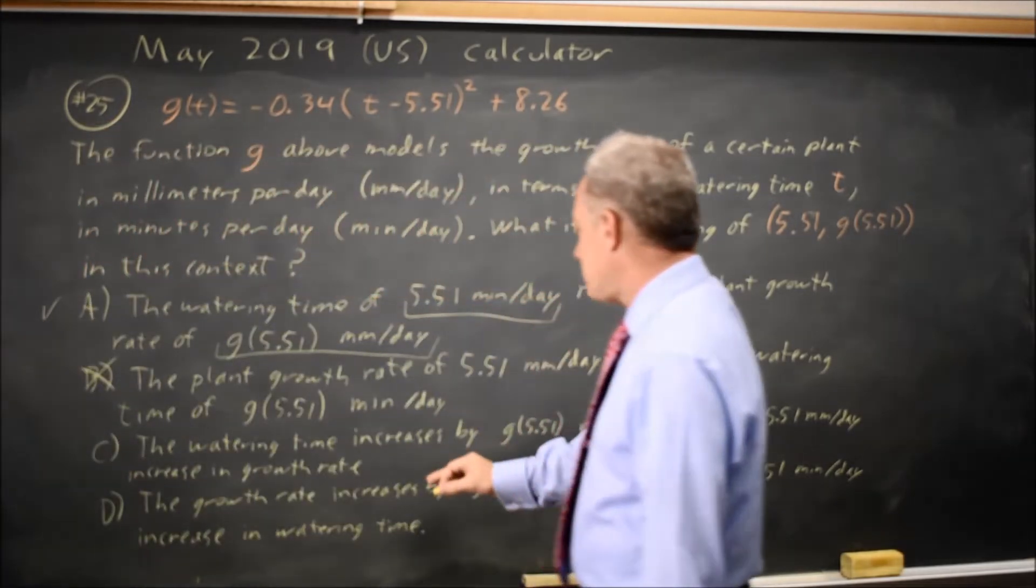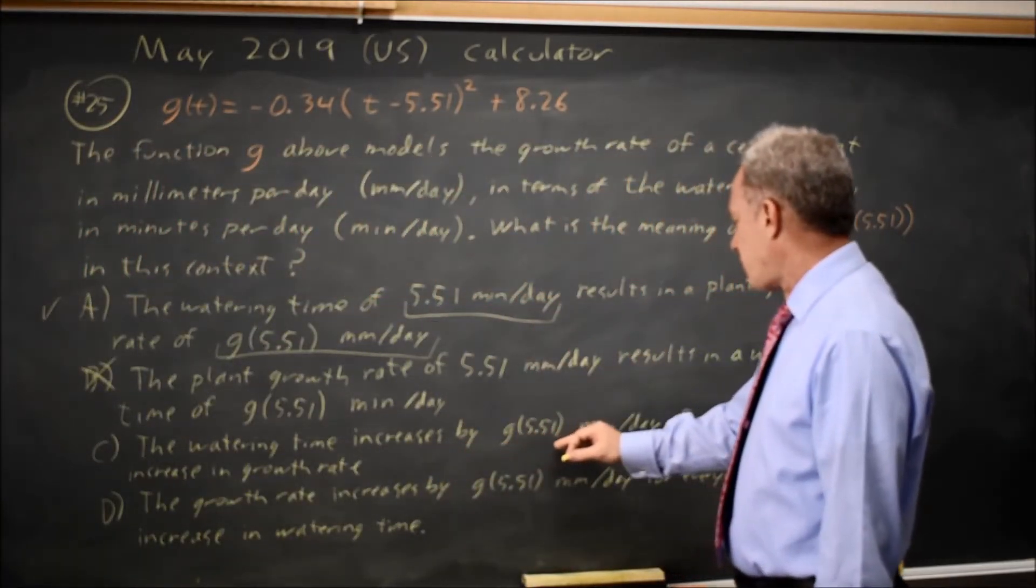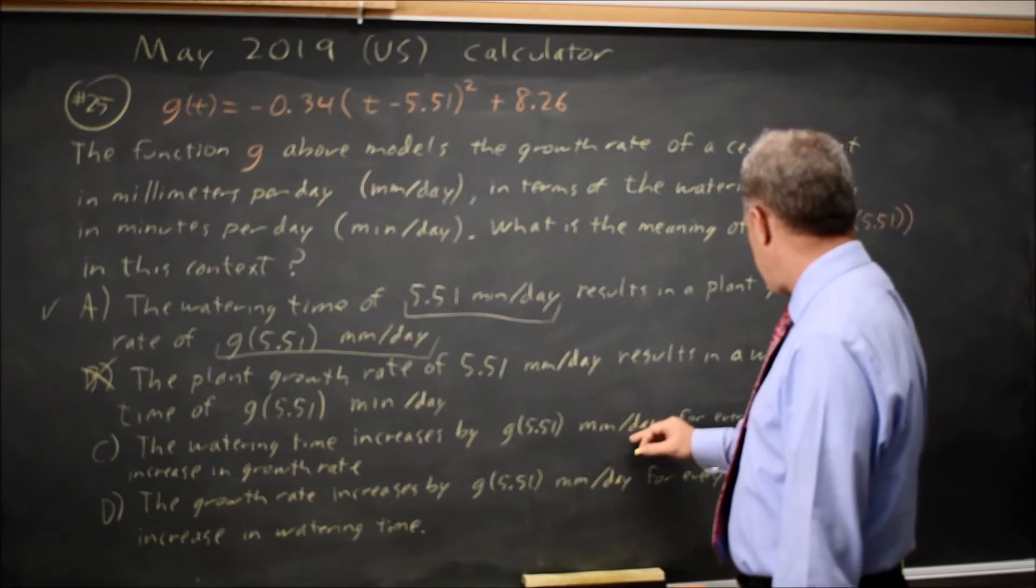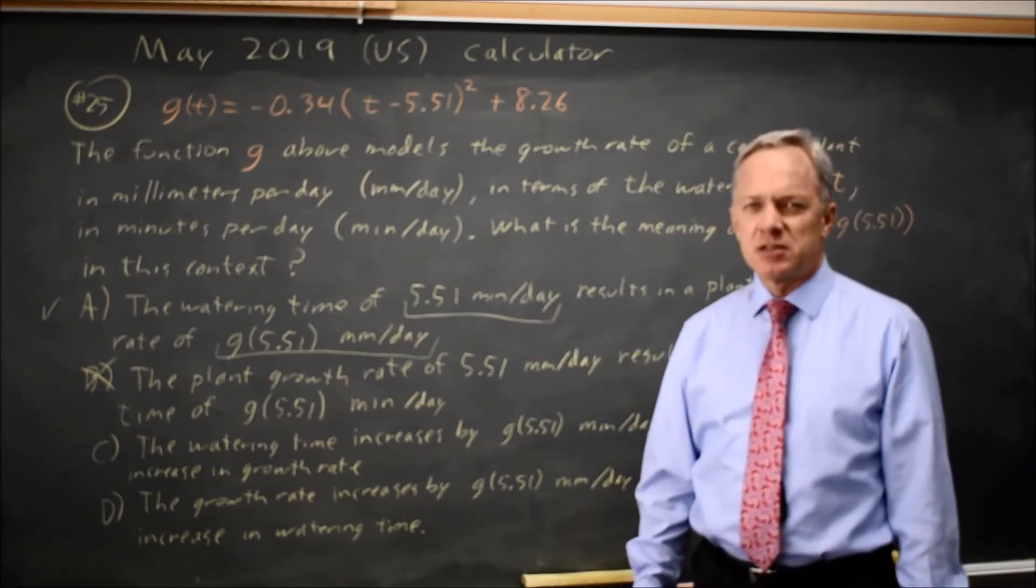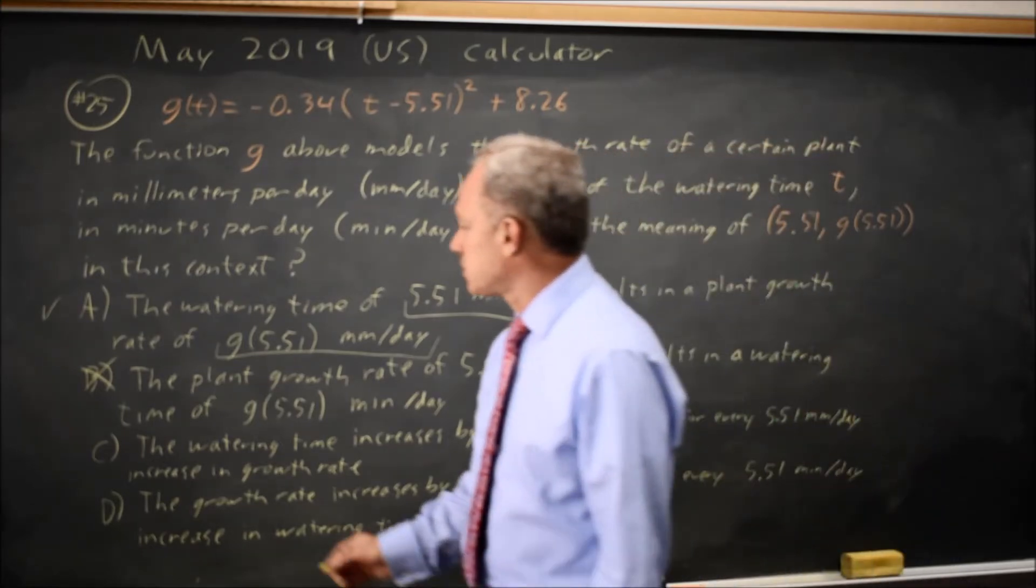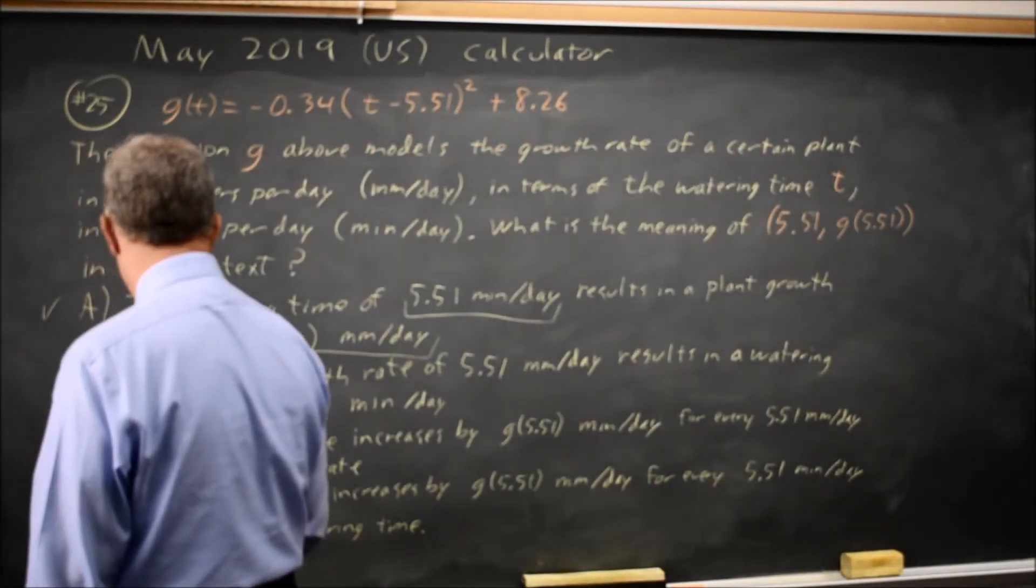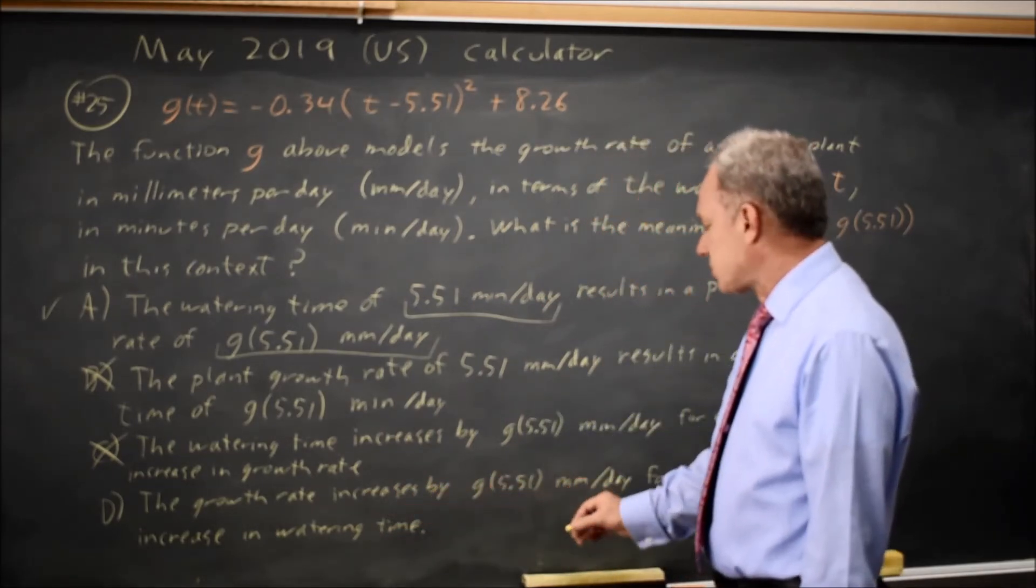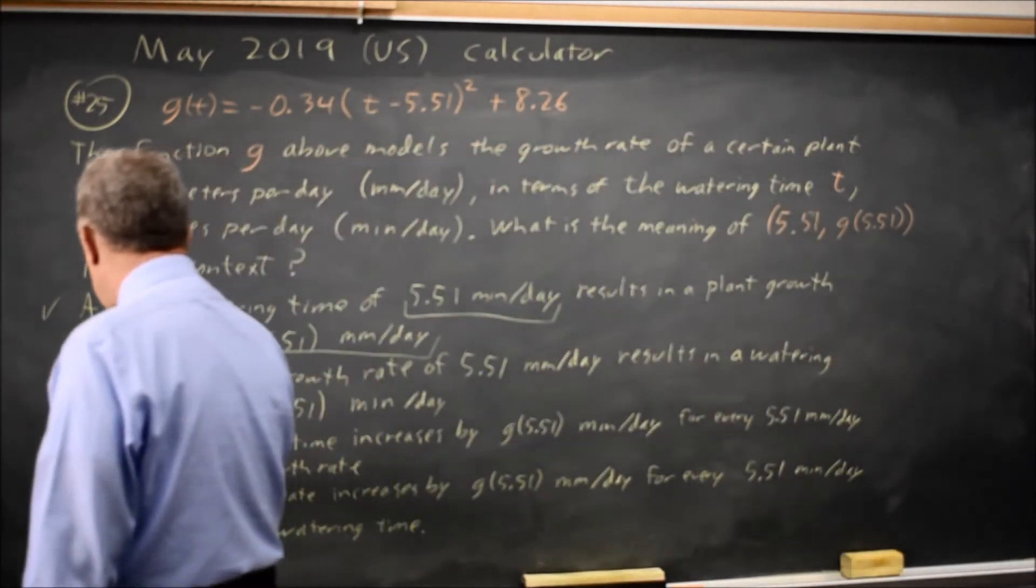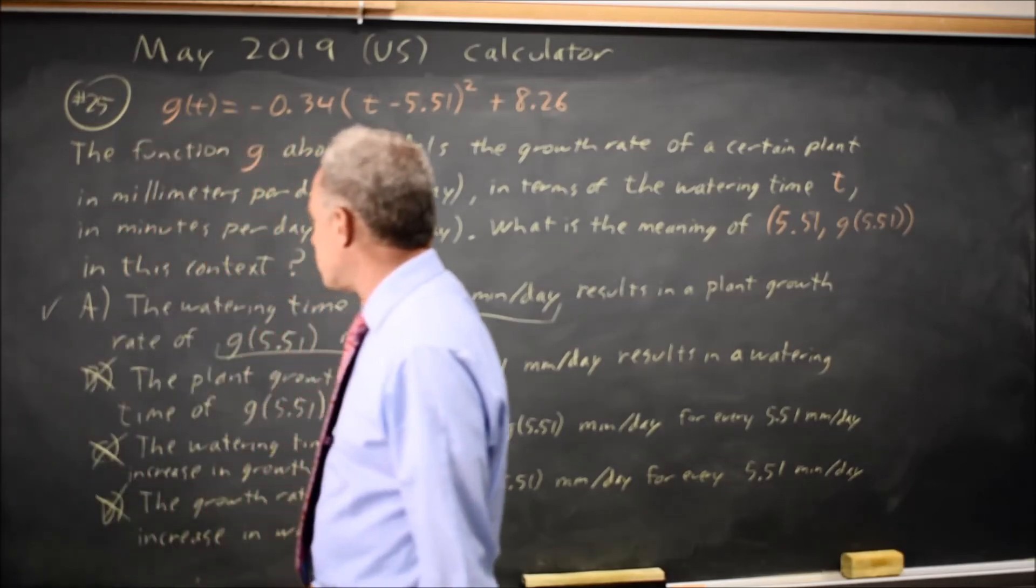Choice C says watering time increases by g of 5.51 minutes per day for every 5.51 millimeters per day increase in growth rate. That sounds like a slope, but this is a quadratic equation. It doesn't have a slope. Choice D is similar, treating it like a slope. So C and D are wrong.